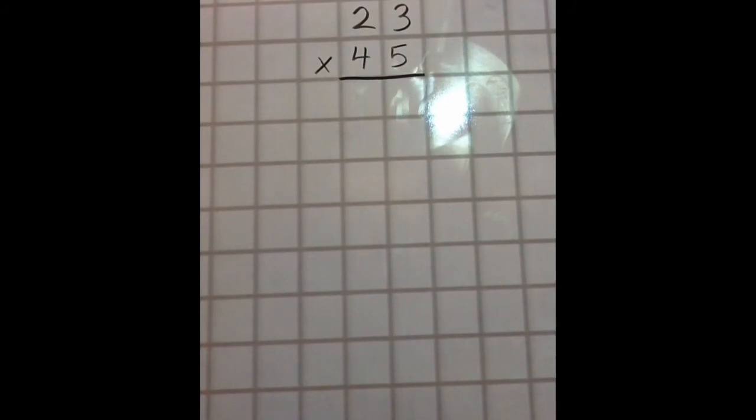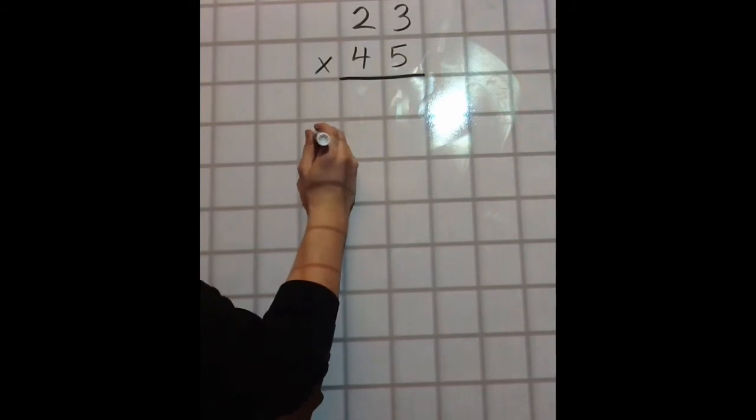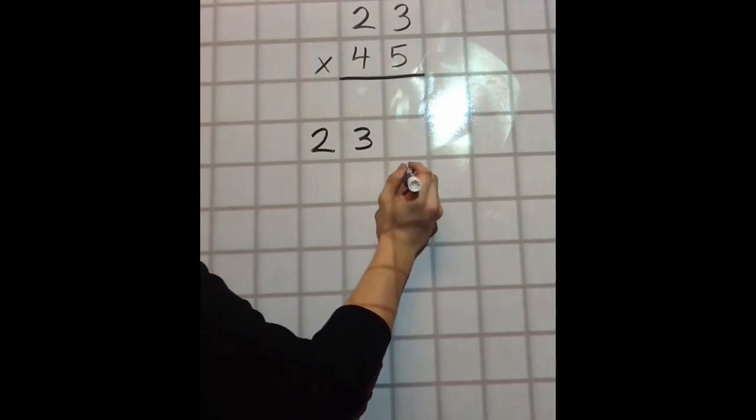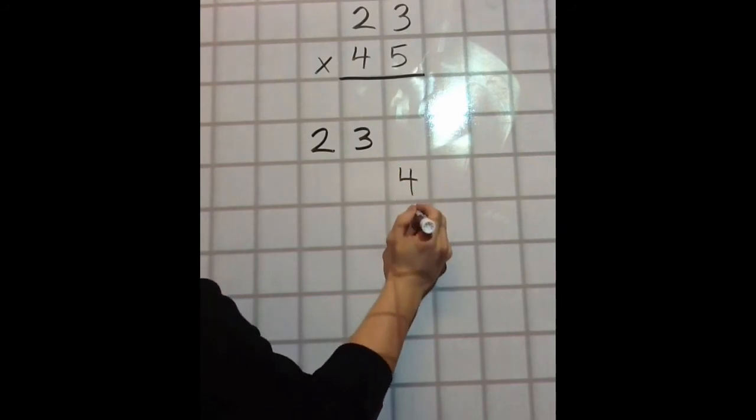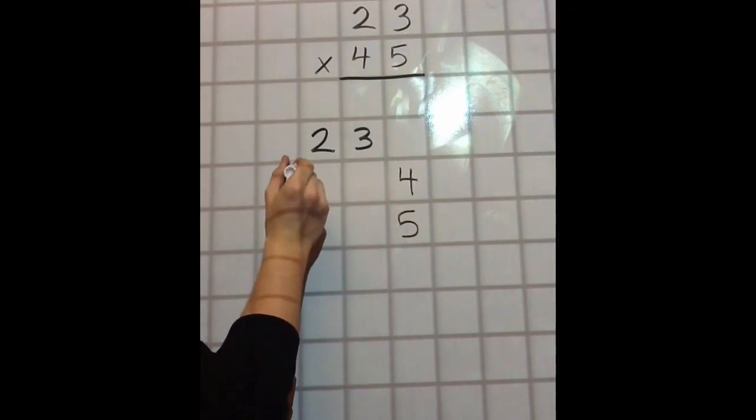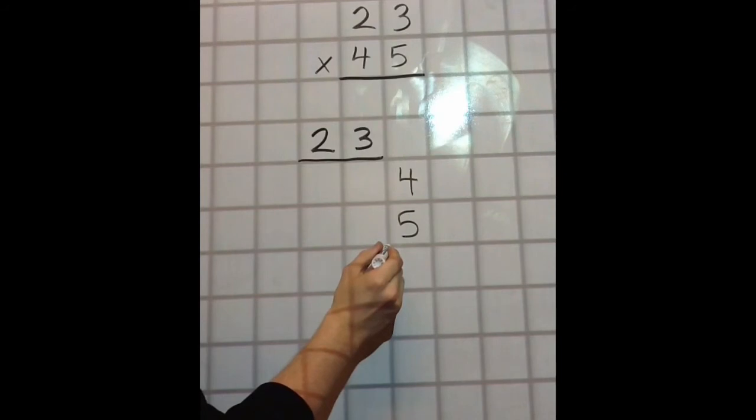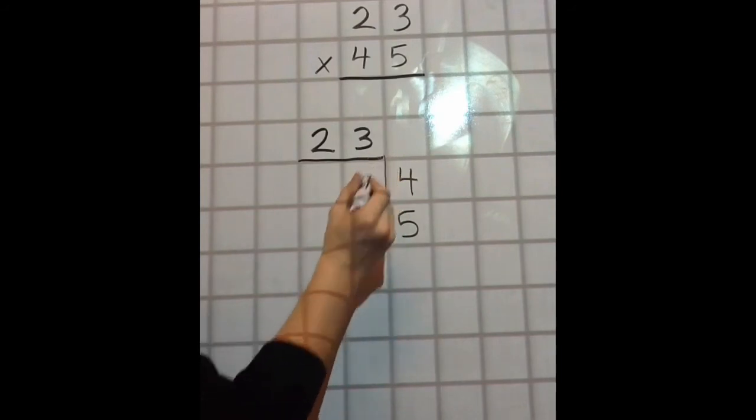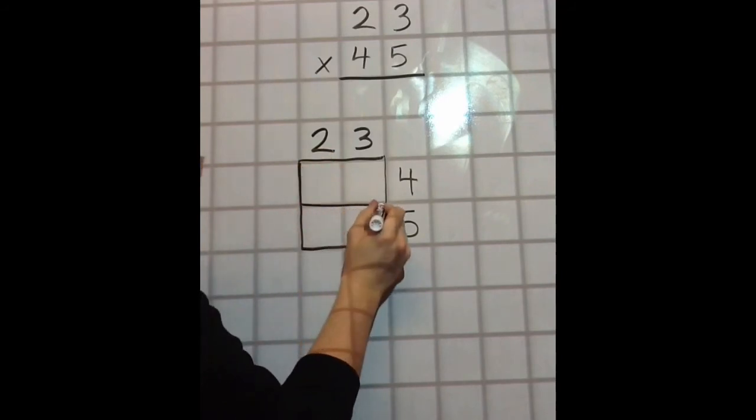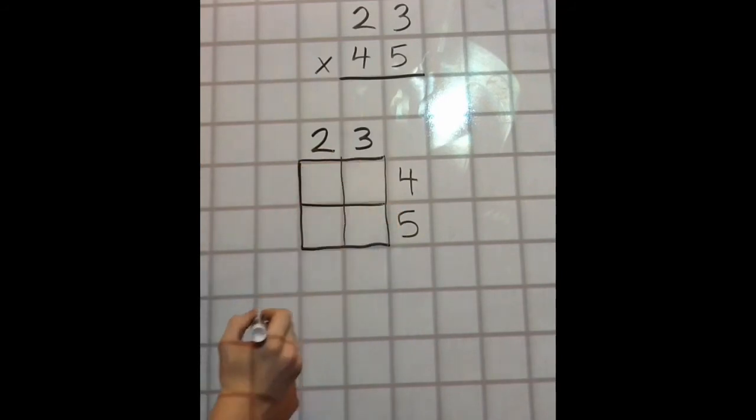And our last method for 2 by 2 addition is the lattice method. So, again, this is not really a great way for us to set up our problem, so I'm going to start by writing our top number, 23. Go over one and down one, and write 45. Now, you'll notice that we have two digits, so we're going to go too wide, and we're going to go too tall as well. Close it up into a box. Fill in the lines in the middle, just like that.